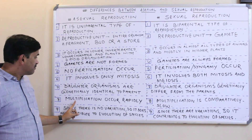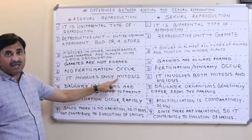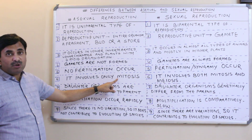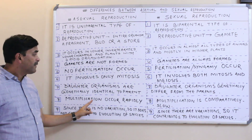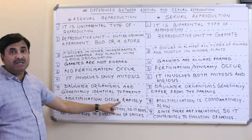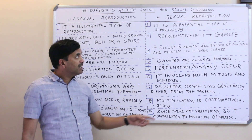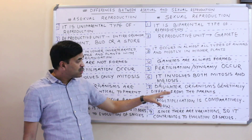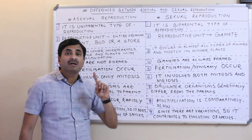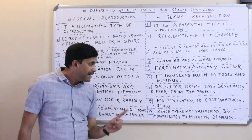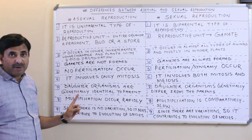Multiplication occurs rapidly in asexual reproduction because mitotic division is a fast mode of division. Sexual reproduction, by comparison, is comparatively slow.